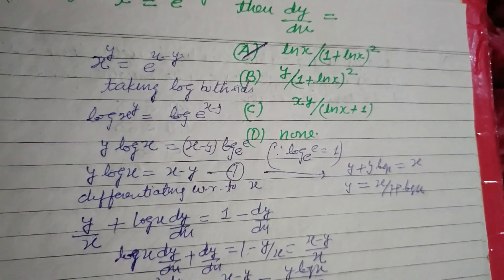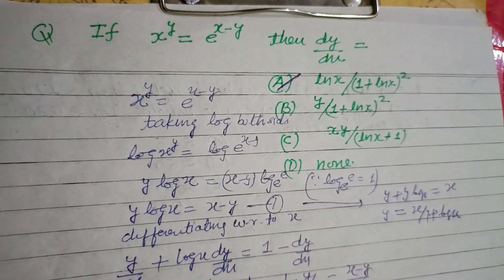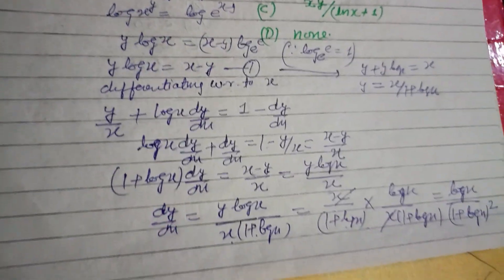Option A of this question: log x over 1 plus log x whole square. So option A is correct. I hope you got it. Please like the video, subscribe the channel, thanks for watching.